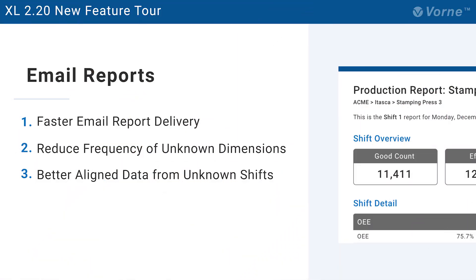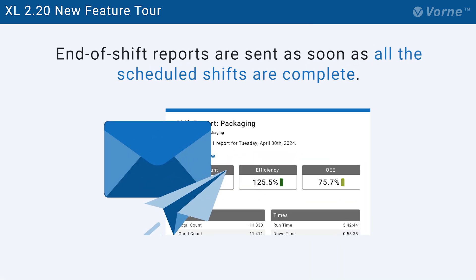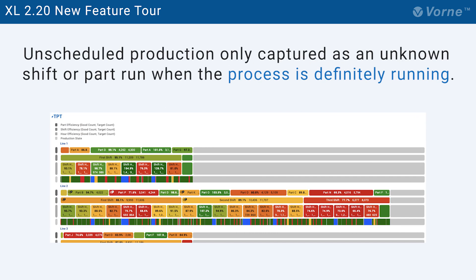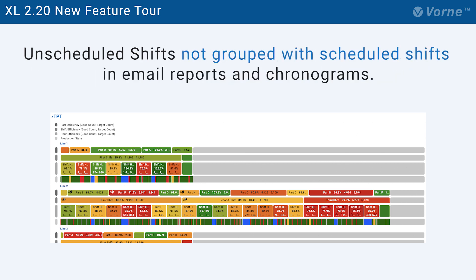220 includes three features that are all designed to improve the timeliness of email reports. We made a bunch of changes behind the scenes to ensure that end-of-shift reports get sent from Excel Enterprise as quickly as possible, as soon as all the scheduled shifts are complete. Excel will only capture unscheduled production as an unknown shift or part run when it detects that the process is definitely running. Additionally, if Excel does detect an unscheduled shift, it won't group it with scheduled shifts in email reports and chronograms.